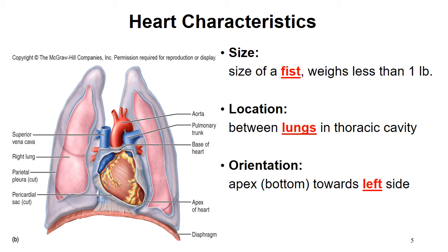It may look confusing. As you're looking at this picture, the right lung is labeled right lung, but from the frontal view you might say that's your left. The orientation is always from the patient's left or right — in other words, from the back. You need to know where right and left are and the orientation of the heart. The apex, which is the bottom portion, points towards the left.